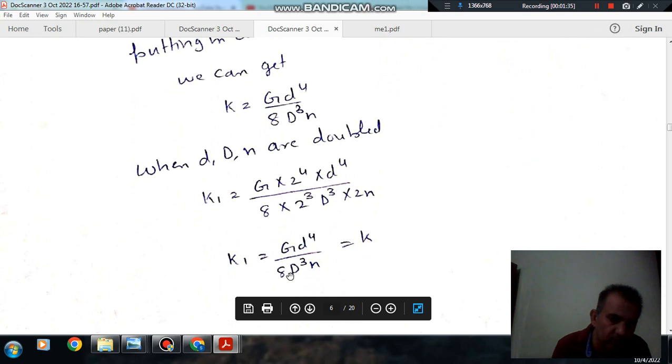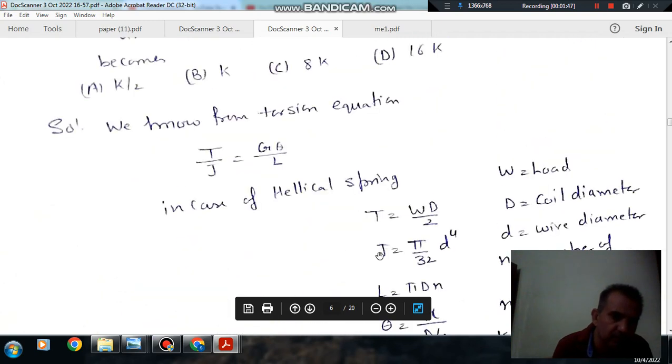So k1 will be Gd^4 divided by 8D^3n, because here 2 to the power 3 into 2, here 2 to the power 4 will be equal to previous k only. So answer is k, option B.